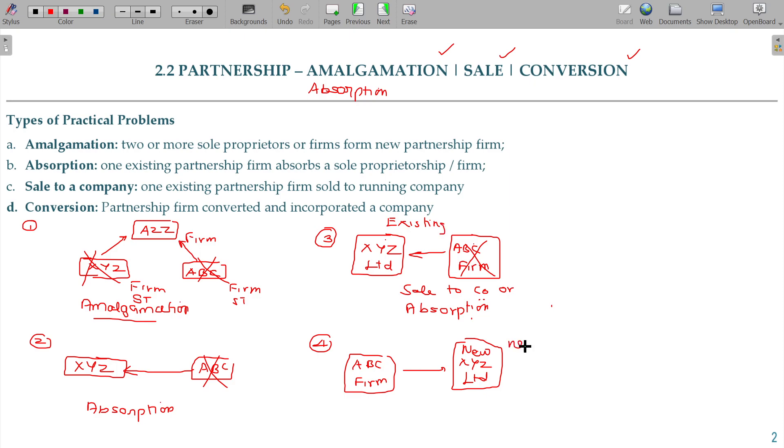If a new one is formed to transfer the assets and liabilities of ABC to them, they take it over. The firm is converted. Conversion. These are the varieties you have to understand.